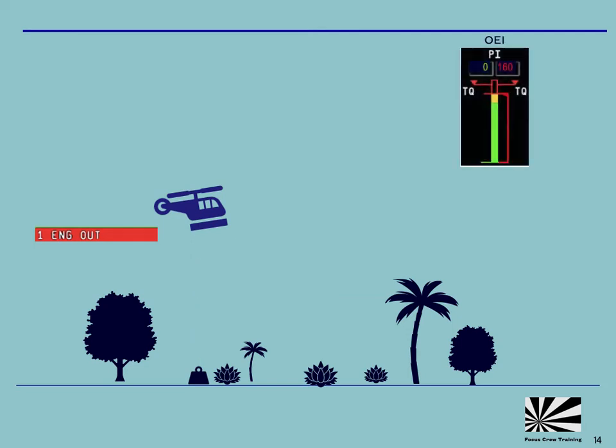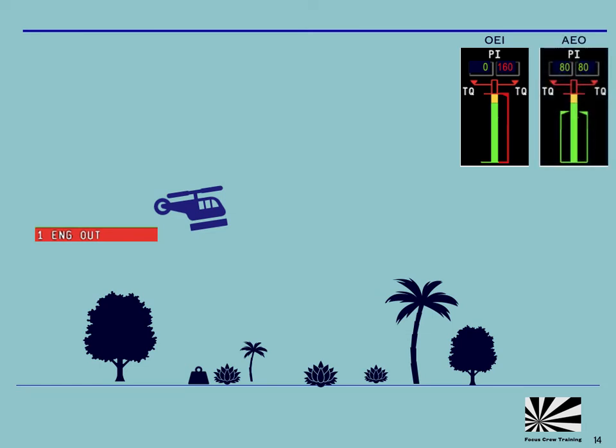If this helicopter has engines which can supply 160 percent of power at the two and a half minute rating and it was using 80 percent of power from each engine in the hover, then if a single engine fails it should be able to maintain the hover, as the remaining good engine can supply the same total power that the helicopter was previously using. A transition into forward flight in order to reposition to a safe place to land should only result in minimal height loss if the pilot maintains two and a half minute power and the correct rotor speed.